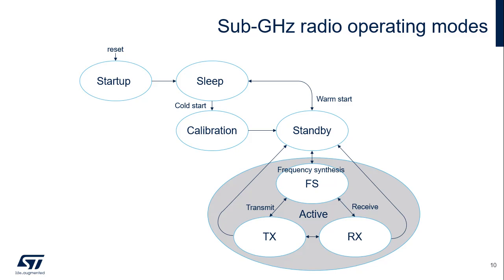The sub-Gigahertz radio operating modes are depicted in this figure. In the start-up phase, some internal sub-Gigahertz radio supply and clock start-up occurs, after which the sleep state is entered. The sleep state represents the lowest power mode with no radio activity. Optionally, the sub-Gigahertz RTC timer can be kept running for duty-cycled operations. To exit the sleep state, firmware has to set the sub-Gigahertz serial peripheral interface NSS signal low.